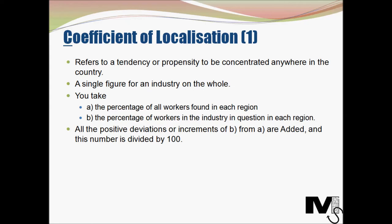The next concept in Sargent's theory is the Coefficient of Localization. Many people get confused between the two factors. The Coefficient of Localization refers to a tendency — also called a propensity. While the Location Factor refers to the actual concentration of an industry in a specific area, the Coefficient of Localization refers to the tendency of an industry to get concentrated anywhere in the country. It gives us an indication of how centralized or decentralized an industry can be in the entire country, and is therefore a single figure for an industry on the whole.